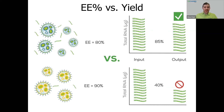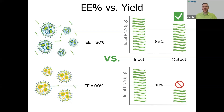I'd also like to highlight that there's a difference between encapsulation efficiency — how much RNA ends up inside the particle versus outside, which is the most commonly reported value in literature — and the yield. One formulation might show a more moderate encapsulation efficiency but might see less losses of RNA through degradation or particle aggregation. For example, if you were comparing two formulations with an encapsulation efficiency of 80 compared to 90, you'd choose the higher one. However, if that sample undergoes significant aggregation during dialysis and loses material in the process, you'll wind up with less particles in your final sample. So it's really important to keep track of yield throughout the process as well as the encapsulation efficiency.